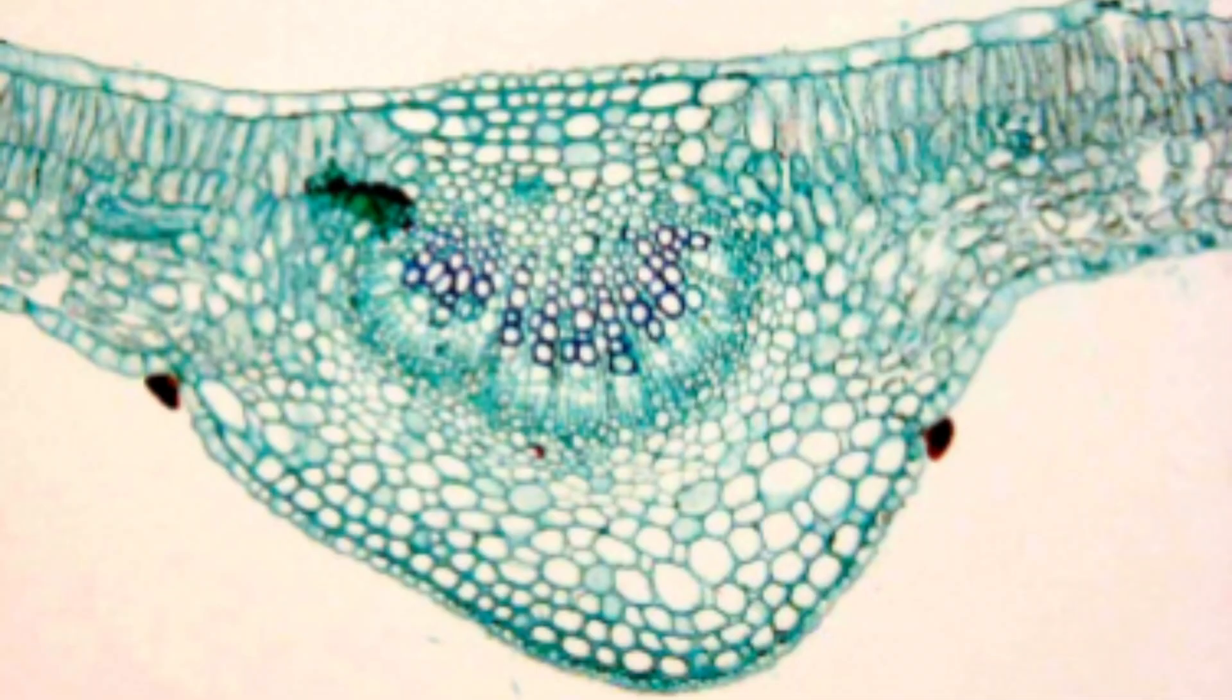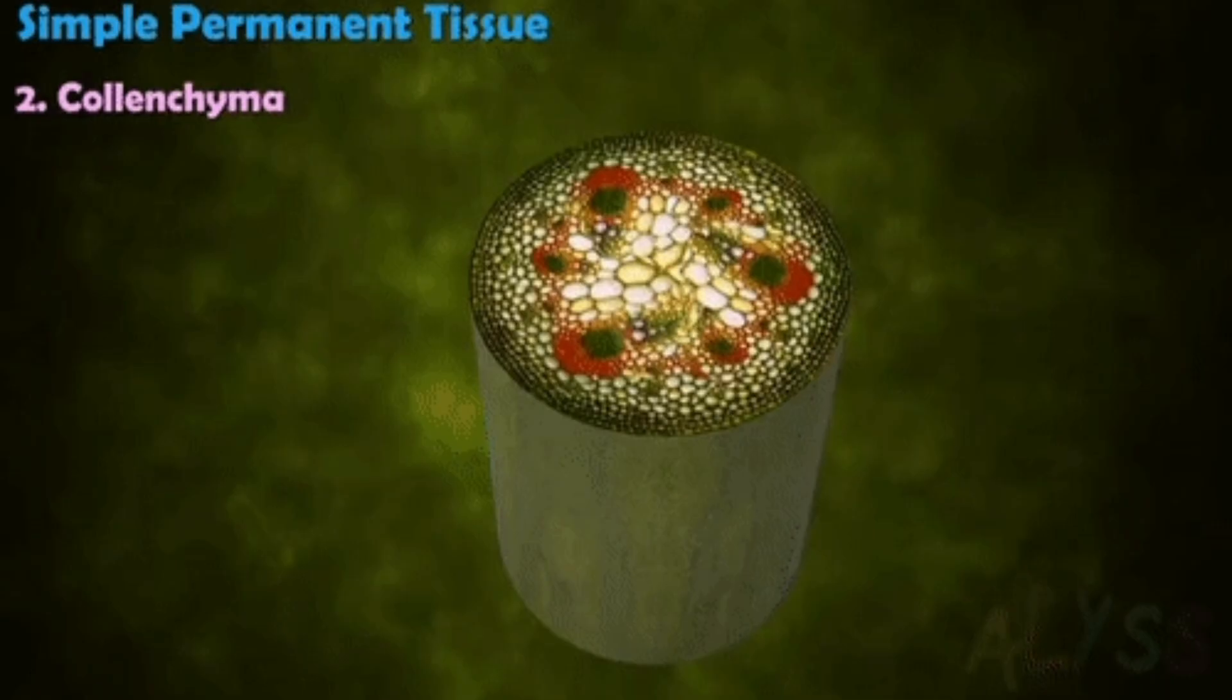This is the colenchyma tissue. The colenchyma tissue has irregularly thickened cell walls. The cell walls are thickened due to cellulose deposition, and the cells look polygonal.